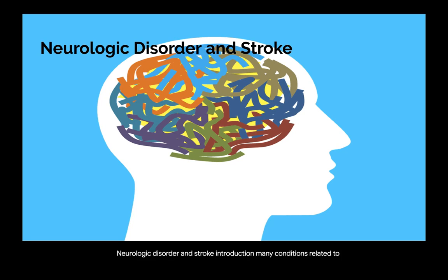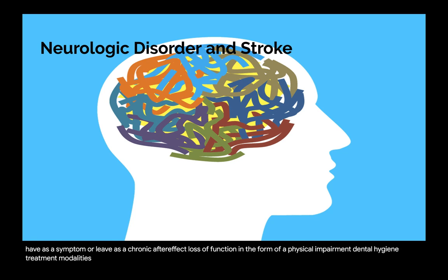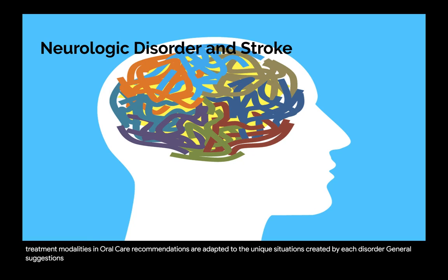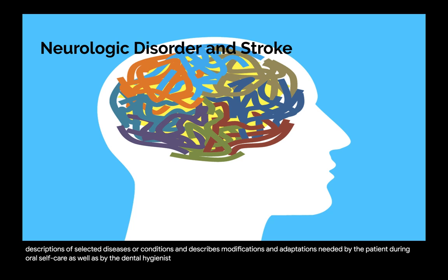Many conditions related to the neuromuscular system, joints, or connective tissue have as a symptom or leave as a chronic after-effect, loss of function in the form of a physical impairment. Dental hygiene treatment modalities and oral care recommendations are adapted to the unique situations created by each disorder. This chapter contains descriptions of selected diseases or conditions and describes modifications and adaptations needed by the patient during oral self-care, as well as by the dental hygienist during treatment appointments.